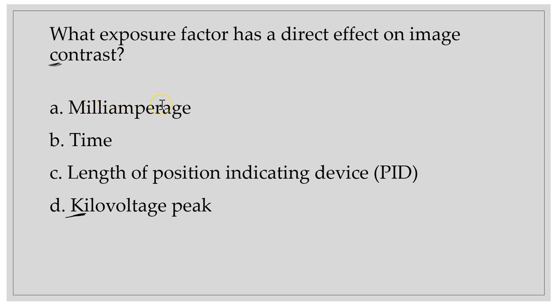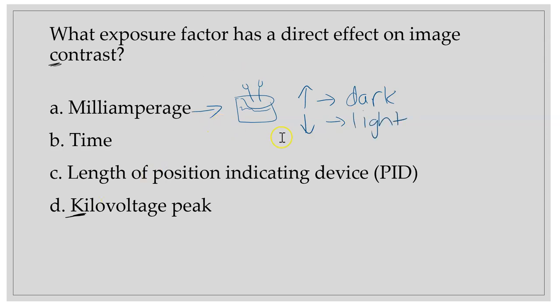mA, or milliamperage, is for density. If you want a dark image, increase the mA. If you want a light image, decrease the mA. Think of baking a cake: if you increase the oven temperature, the cake gets dark; if you decrease the temperature, the cake stays light. Same with mA — increase for darker, decrease for lighter.